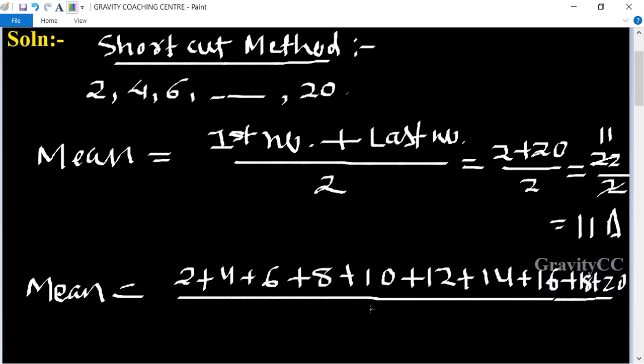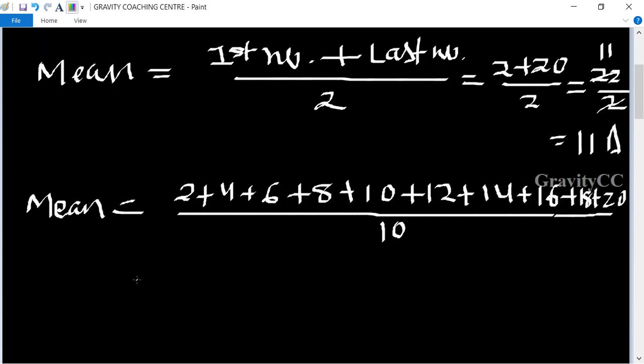Upon 10. So the total 110 upon 10, so it is cancel by 11. Equal to 11, which is the required answer.